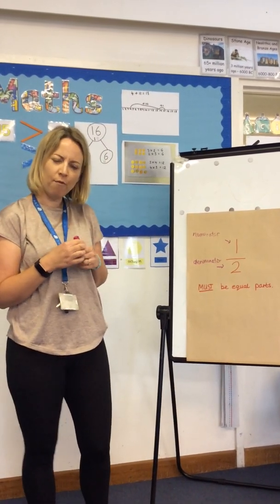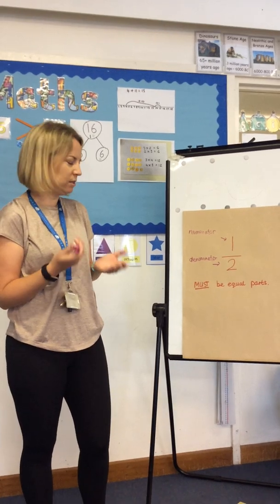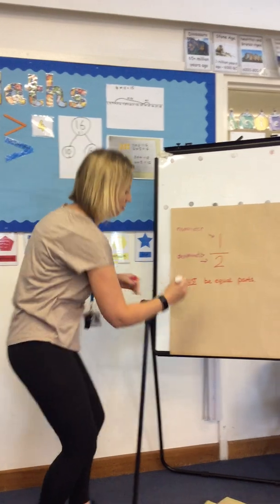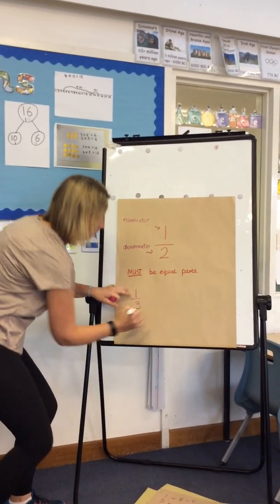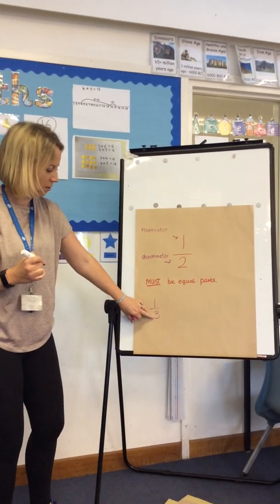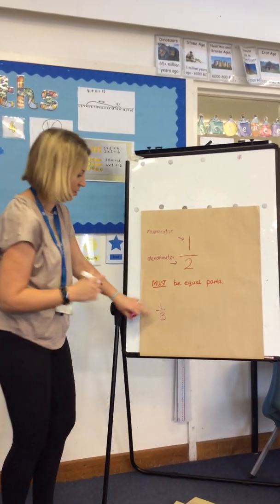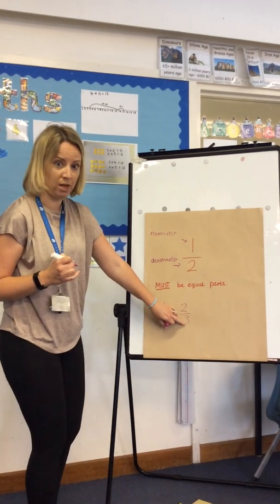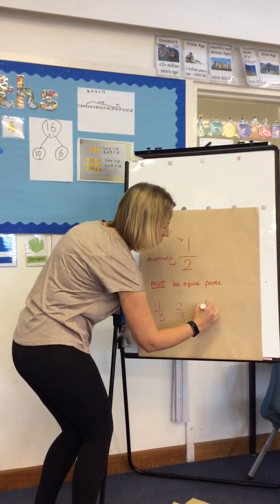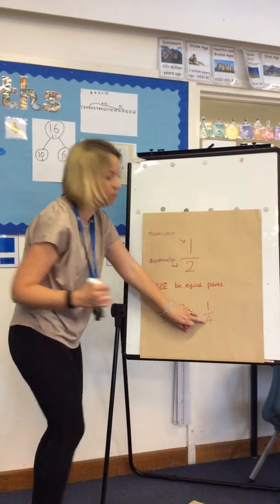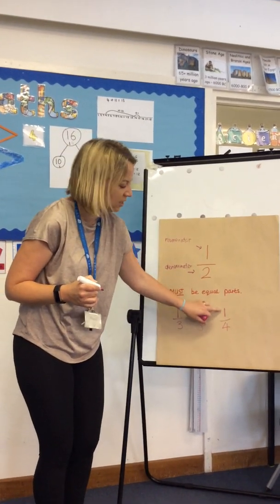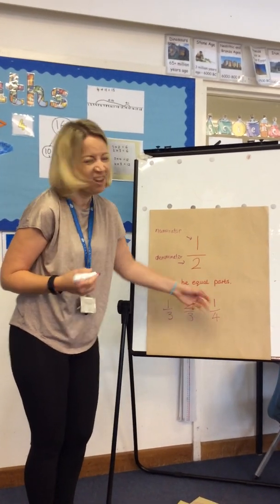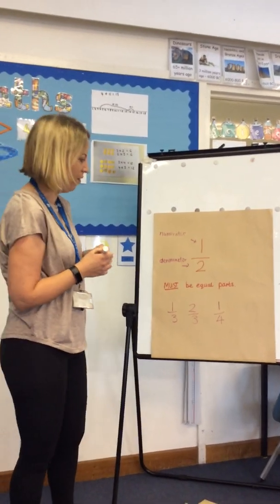Have a little think — what other fractions could you write down? You might have come up with one third: three is the whole, and one part is coloured in. You might have come up with two thirds: three is the whole, two parts coloured in. You might have come up with one quarter — sometimes we say one fourth because it sounds like that, but we try to use the word quarter. That's your whole, that's your part. Hopefully you came up with lots of other fractions.